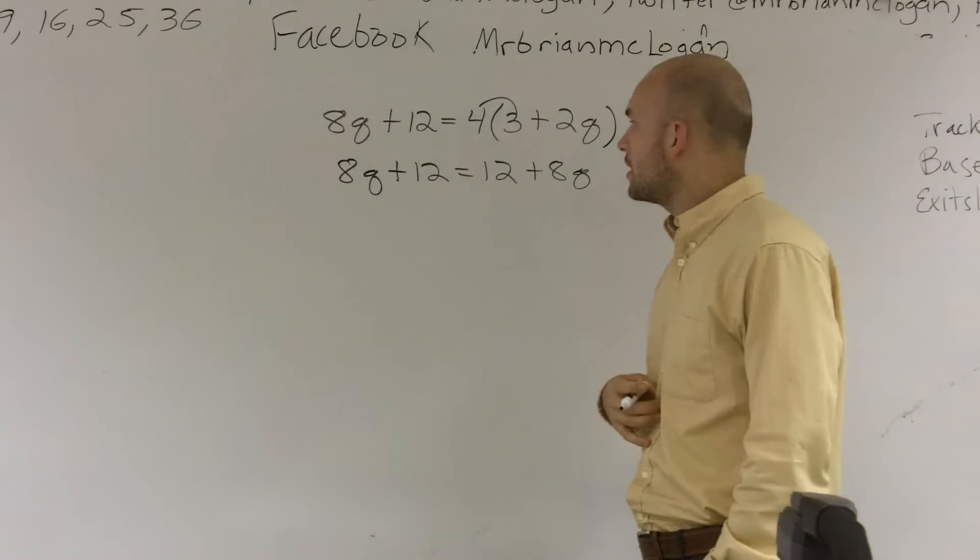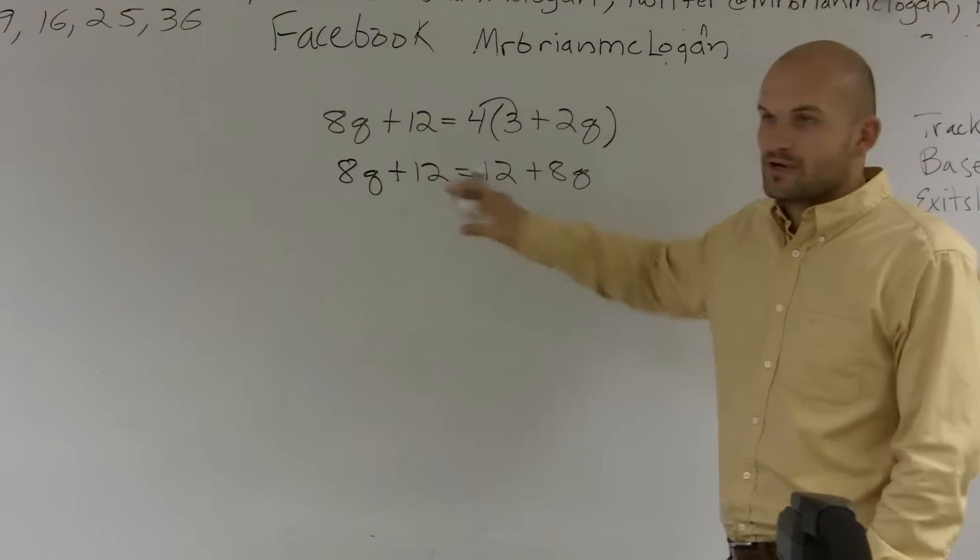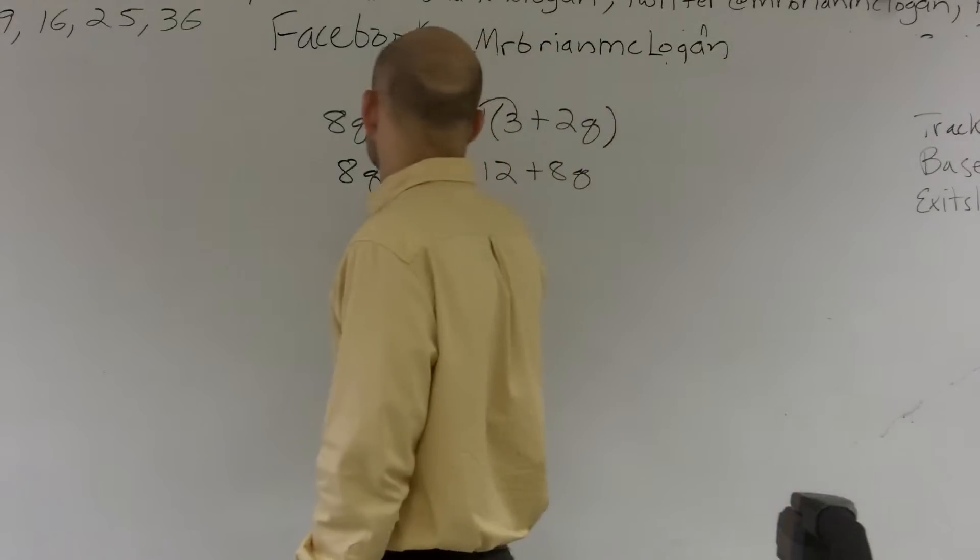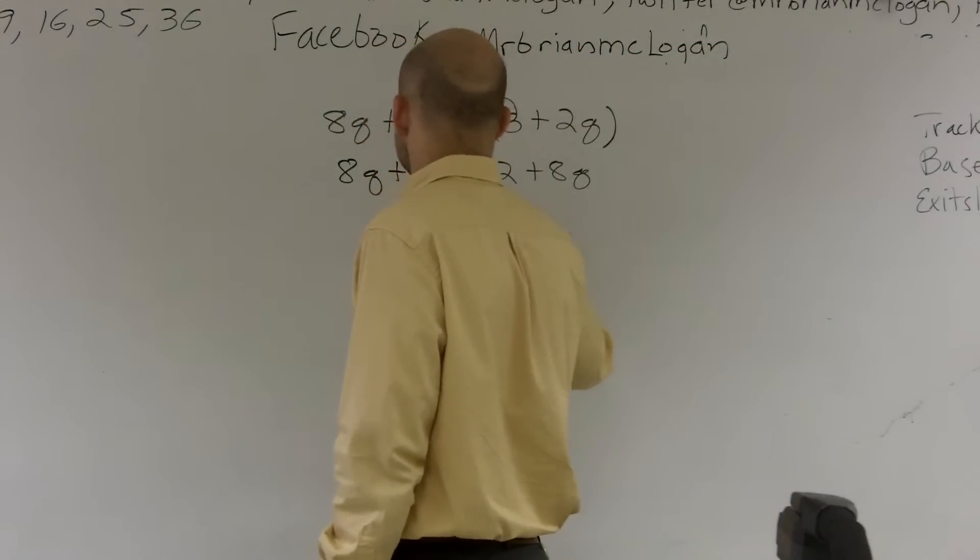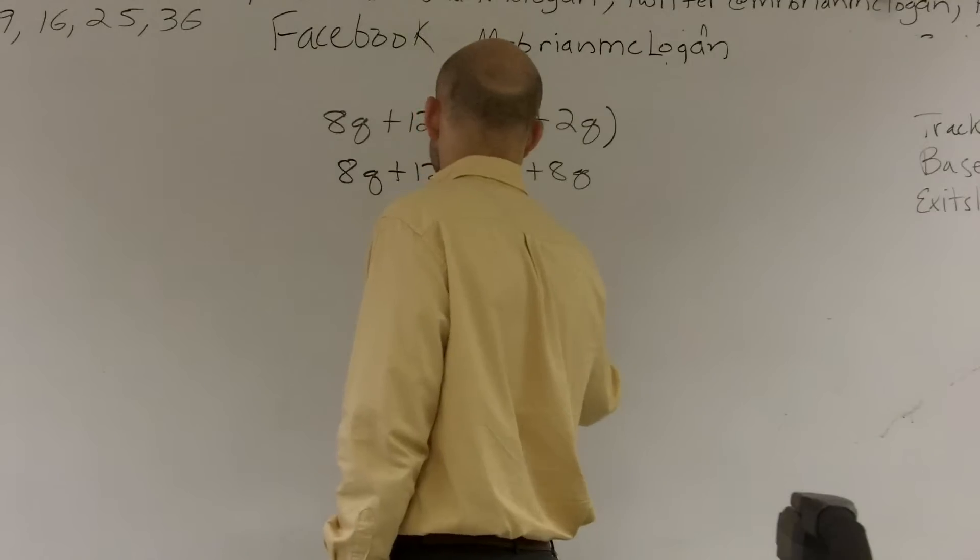Because if I use my regular operations, let's even just say I wanted to get rid of my constant. So I subtract the 12 on both sides. Well, those both cancel out. I'm left with 8q equals 8q.